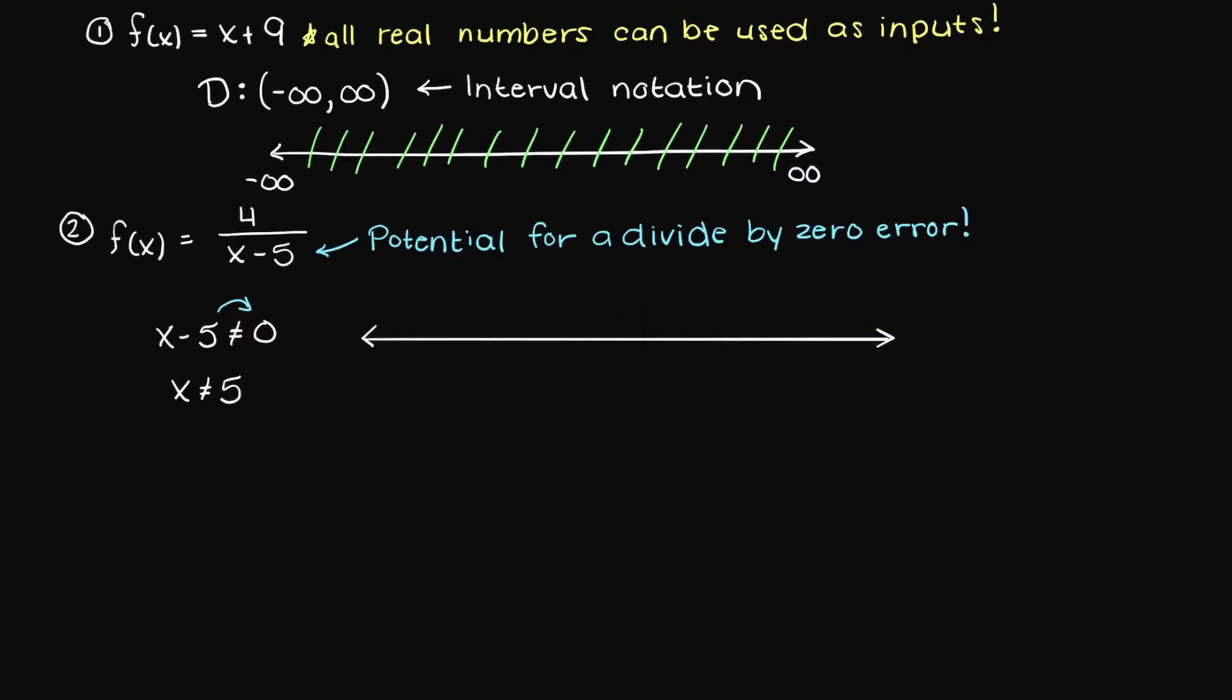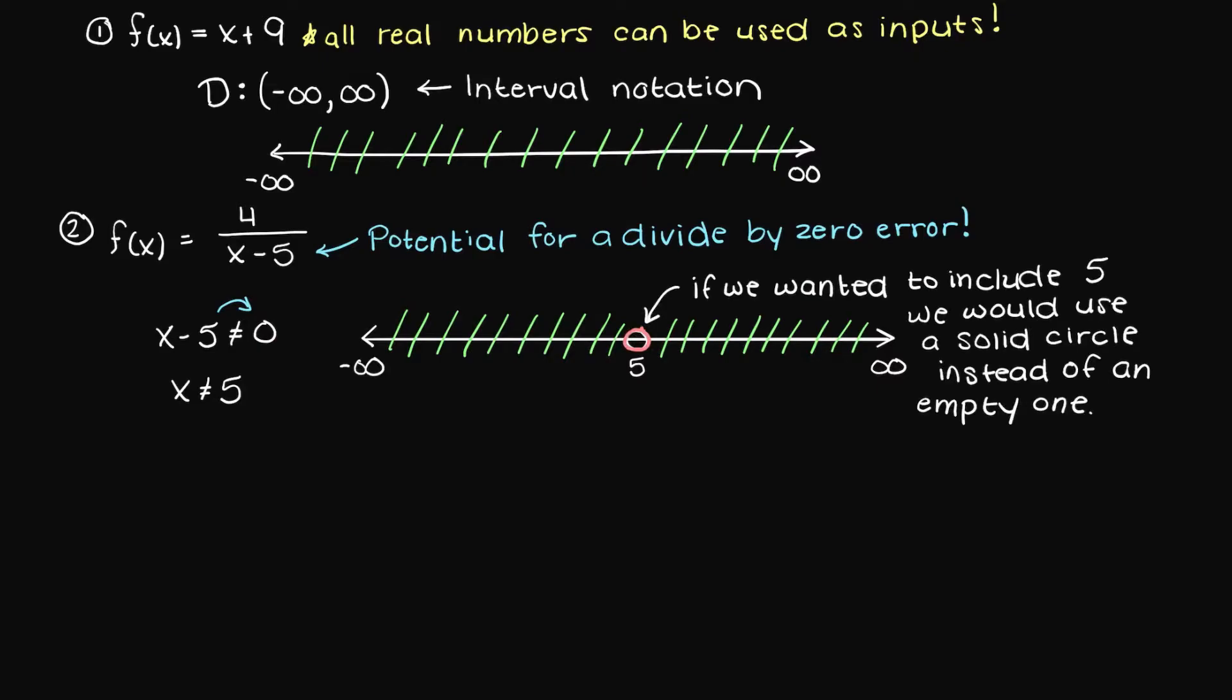Looking at our number line, we can mark a hole at 5, which means at exactly an input of 5, our function will be undefined. So let's write our answer in interval notation. We write capital D, colon, again to show that we are presenting the domain boundaries, round bracket, negative infinity, up to 5, and a round bracket again, which shows that we are not including 5 in our domain.